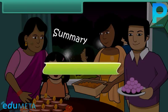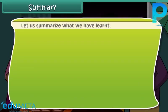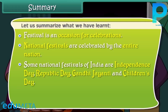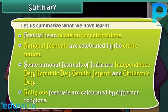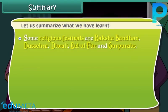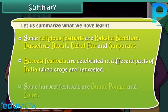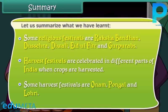Summary. Let us summarize what we have learnt. A festival is an occasion for celebrations. National festivals are celebrated by the entire nation; some examples are Independence Day, Republic Day, Gandhi Jayanti, and Children's Day. Religious festivals are celebrated by different religions; some examples are Raksha Bandhan, Dussehra, Diwali, Eid ul-Fitr, and Guru Purabs. Harvest festivals are celebrated in different parts of India when crops are harvested; some examples are Onam, Pongal, and Lohri.